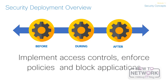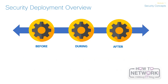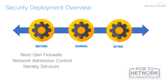You need to implement access controls, enforce policies, and block applications and overall access to assets that reduce the extent of the network's vulnerable surface area, which saves time and money. Unfortunately, even with good access controls, attackers have a relatively easy time entering the network perimeter. Before an attack, solutions that include firewalls, next-generation firewalls, network admission control, and identity services provide security professionals with the tools they need to discover threats and enforce and strengthen policies.